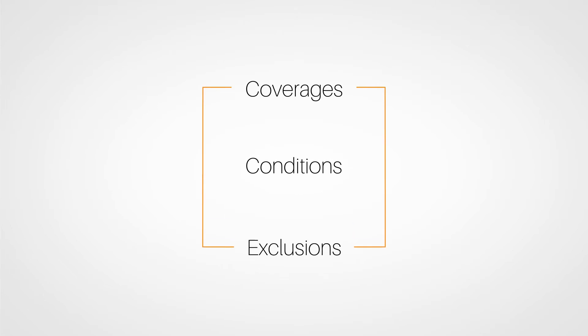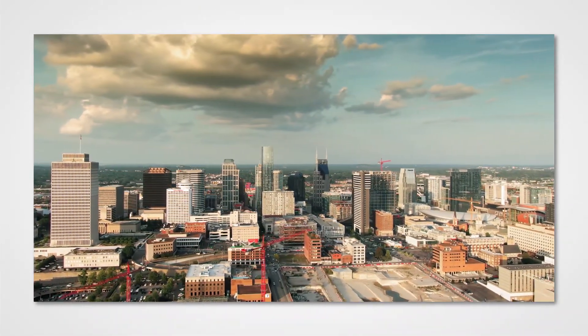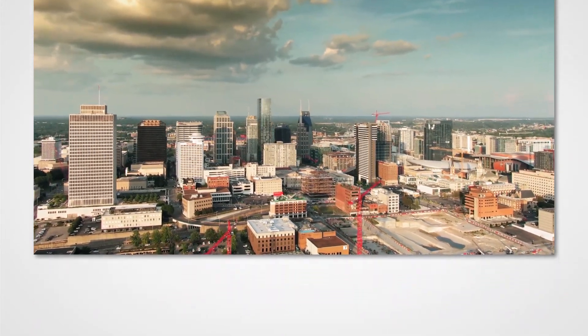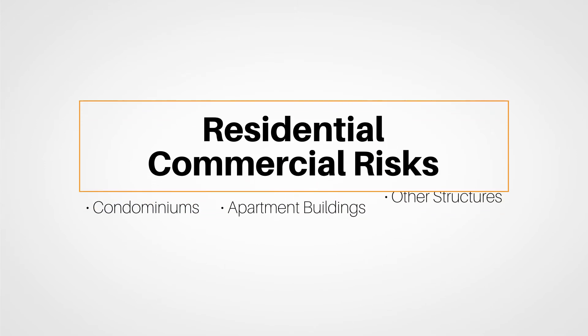Make sure to review this information multiple times as these are areas that can seriously affect whether a client has coverage for a loss or not. Many of the exclusions in a policy may be brought back and eliminated by an endorsement that tweaks the coverage. We'll look at how buildings, other structures, and personal and business property may be covered through the use of certain coverage forms and endorsements. You'll also look at residential commercial risks like condominiums, large apartment buildings and other structures that have owners and/or tenants residing in them.